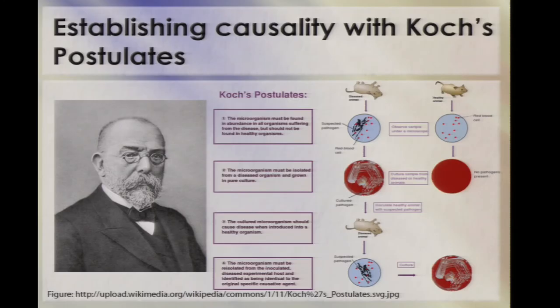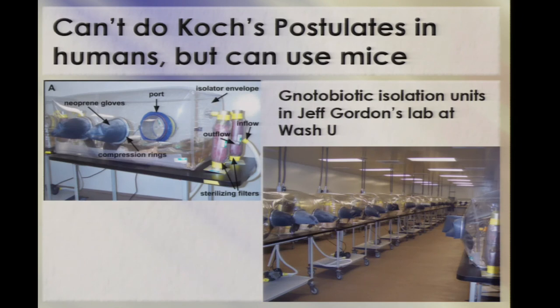This leads to the critical question: how can I tell which of this diversity matters in a way that allows us to tell cause from effect? There's a sense that we should be establishing causality with Koch's postulates — finding the microbe in sick individuals, isolating it, reintroducing it into healthy individuals to make them sick, and then recovering it. But even Koch didn't believe his own postulates, because even in his original work he noticed that many subjects were asymptomatic carriers of what we think of as pathogens. This was reinforced by HMP work on pathogen carriage, where many alleged pathogens are prevalent in healthy populations. Obviously your IRB won't let you try Koch's postulates in humans, but we can use mice, and one thing that's been especially effective has been the use of gnotobiotic isolators — the ones in Jeff Gordon's lab at WashU.